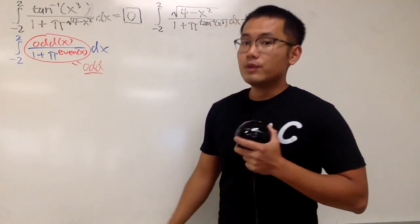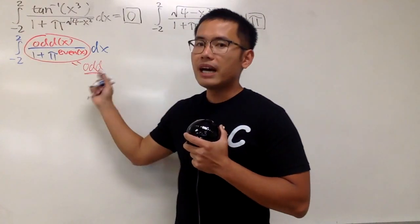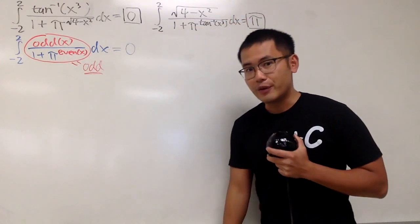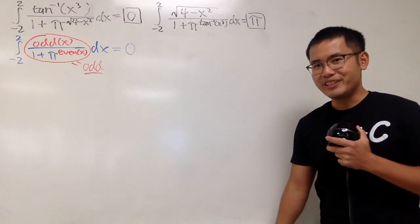Right? So, of course, when you integrate from negative 2 to 2 of an odd function, this right here will just give us 0. That is very nice. However, for the second one, it's slightly trickier.